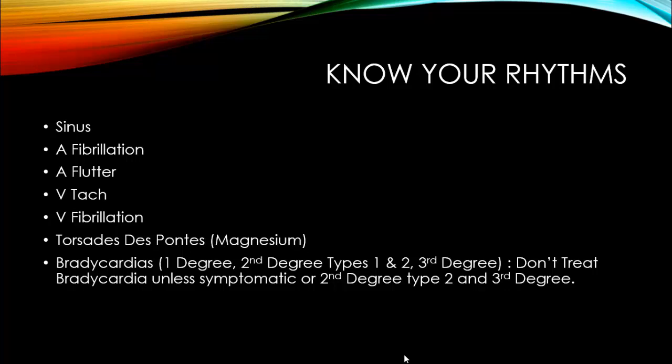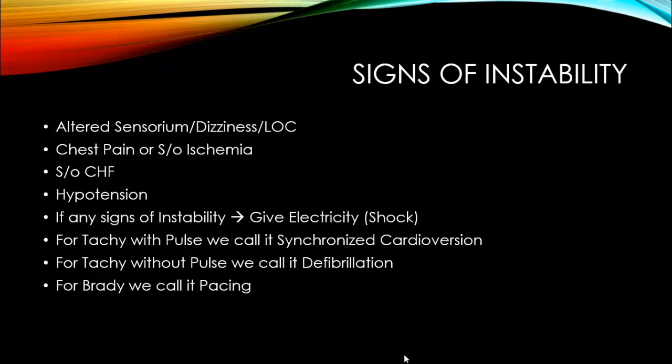What are the signs of instability? Consider a normal heart pumping blood to the brain — you are conscious and alert. If the heart is having an abnormal rhythm and is not able to pump blood to the brain, you have altered sensorium, dizziness, altered level of consciousness or loss of consciousness. Similarly, if the heart is pumping normally, the coronaries get filled during diastole. If that doesn't happen, you may have signs of ischemia, chest pain, or signs of pulmonary edema or congestive heart failure — crackles, bilateral basal, shortness of breath. If the heart is not pumping adequately, blood is not going to the peripheries, so you may have hypotension. Blood not going to the brain, not going to the coronaries, and not going to the peripheries are the signs of instability.